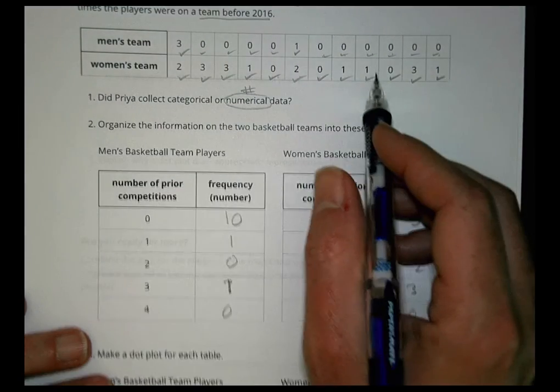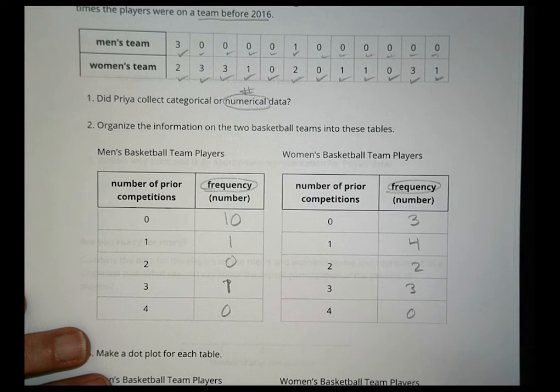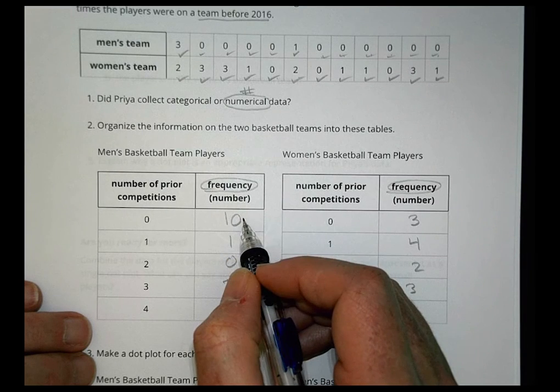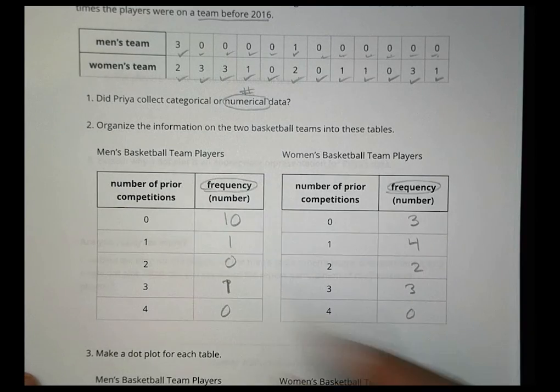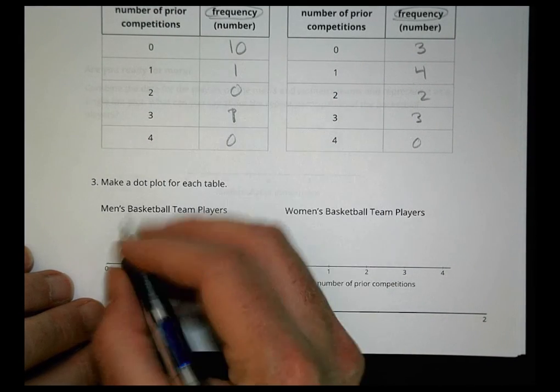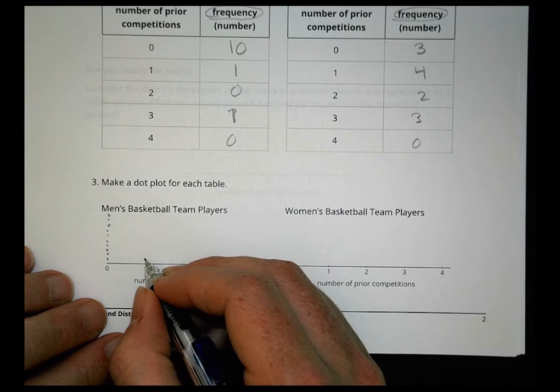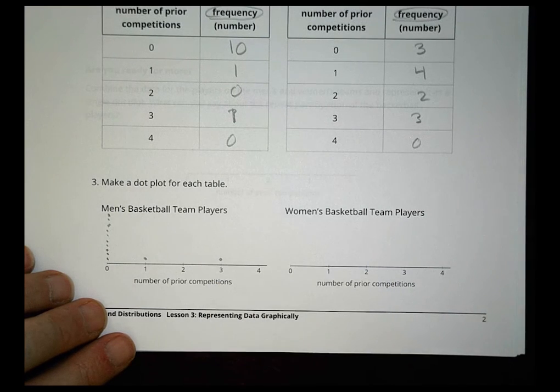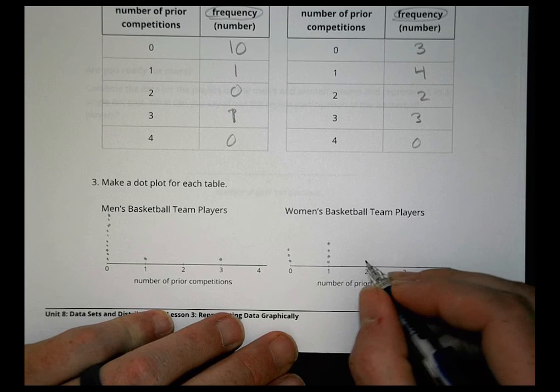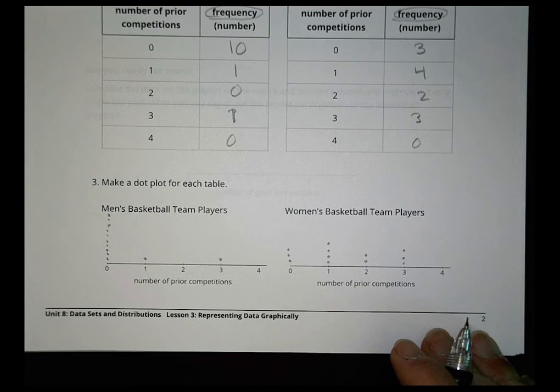So graphically, we're taking this information from this chart and showing it right here with what we call maybe a frequency table. Frequency is going to be how many times it tends to happen. We take the data that we have and we see how many times or how frequently it came up. We can take that same frequency in the table and turn that into a dot plot. So how many men had zero? Well, there was ten, so we'd have to go one through ten. We had one person at one, nobody at two, and one person at three, and that's our dot plot. For the women, we had three at zero, four at one, two at two, three at three, and nobody there. So that's our dot plot for both the men and the women's teams, again, looking at the frequency.